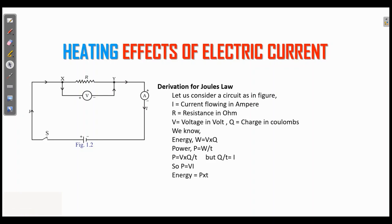To get energy, we should multiply it with T. So energy equals P into T. Here energy equals V into I into T, or heat energy H equals I squared R into T. This is Joule's law.